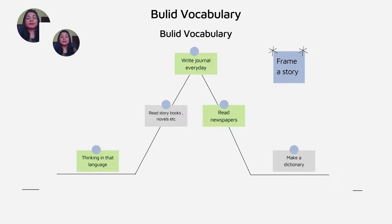Next is frame a story. This is a very important key point. No matter what happens, sometimes there are a few words which we cannot remember, so frame a story out of it. Like, for example, if I say apple, make a story of this word. That will surely help you.